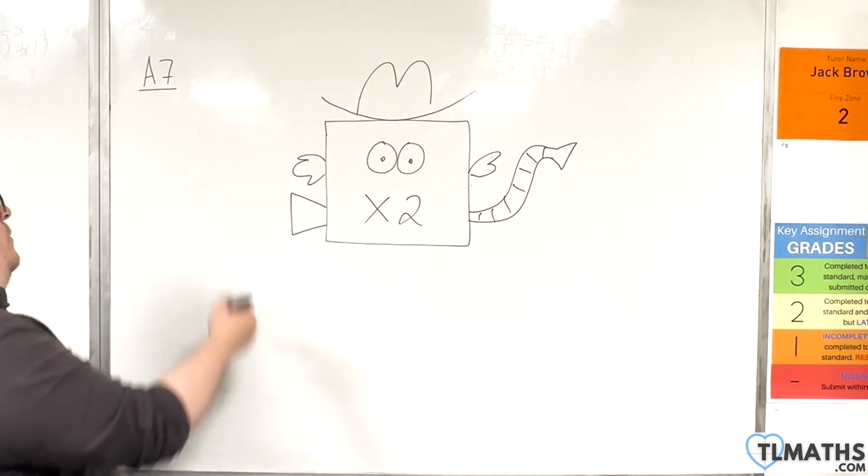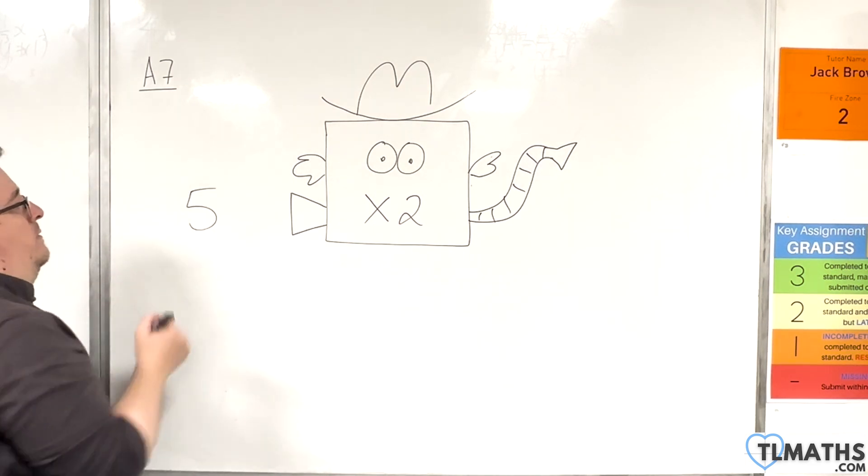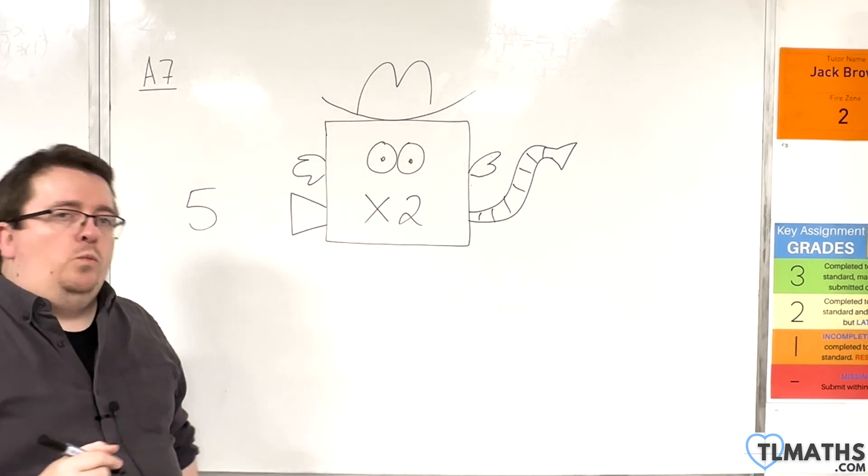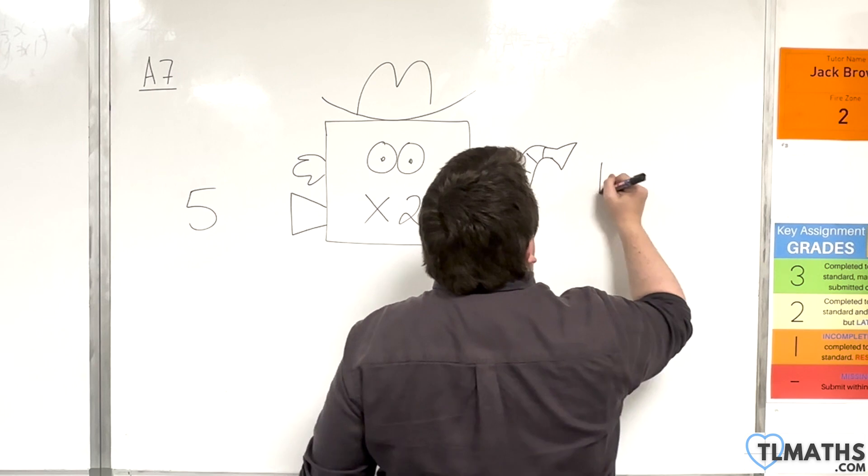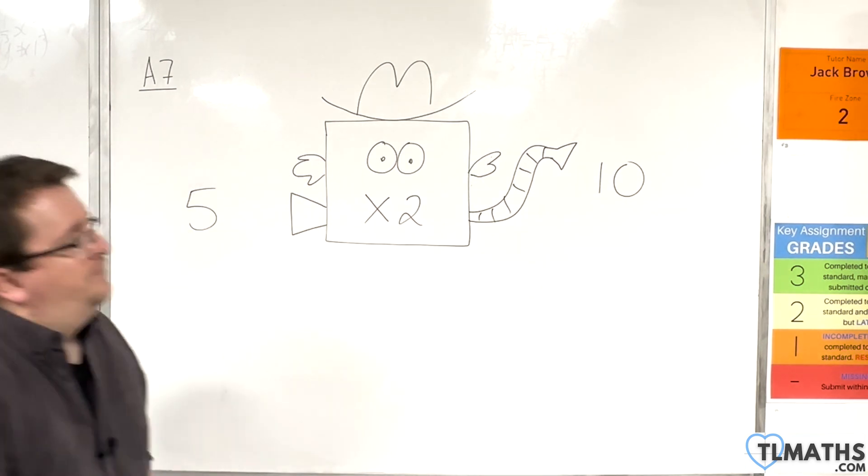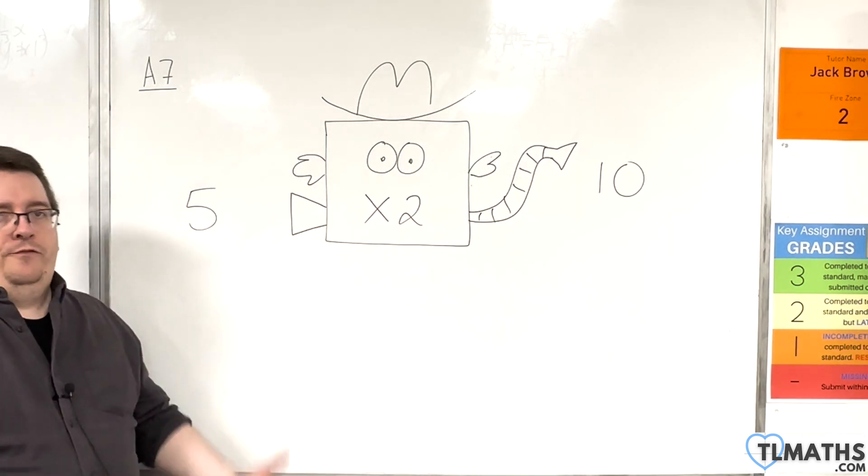So, we might put the number five in, and the function machine tells you what to do. So, we're multiplying by two, and so the output would, of course, be ten. And so, this is a function machine.